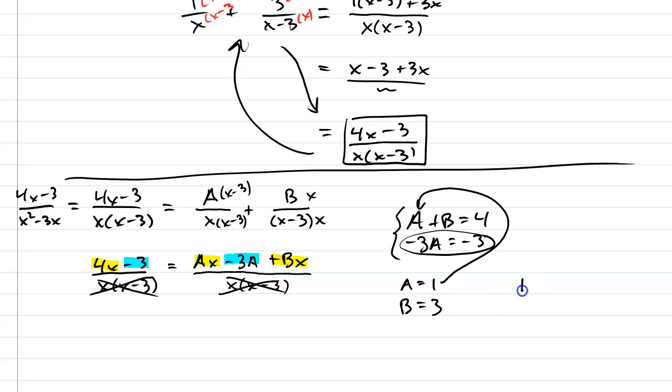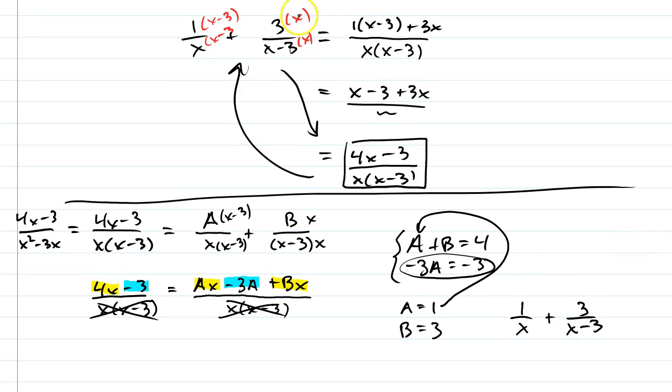So, I know that it's going to be 1 over x plus 3 over x minus 3. Now, this shouldn't surprise us because that's what we had up here, but this is a demonstration of how it's broken up backwards.